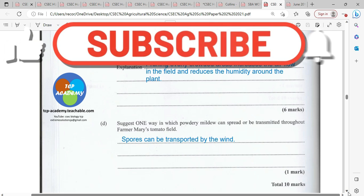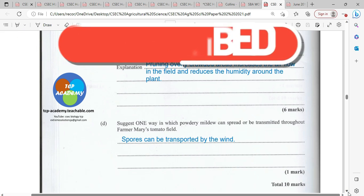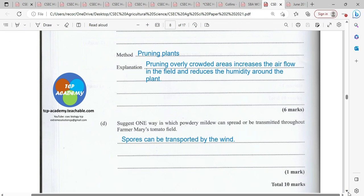Another method is pruning the plants. You really don't want to have the plant having any overly humid area or overly shaded area. Pruning overly crowded areas increases the airflow in the field and reduces humidity around the plants.